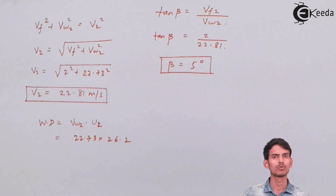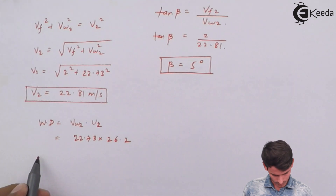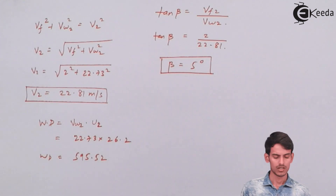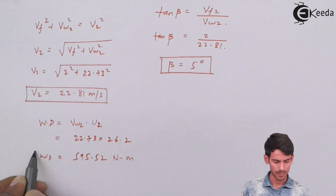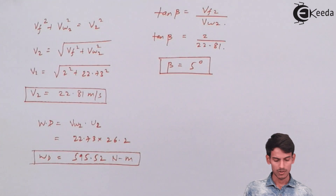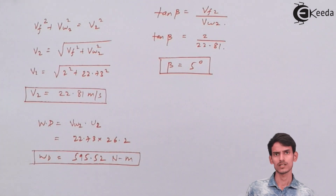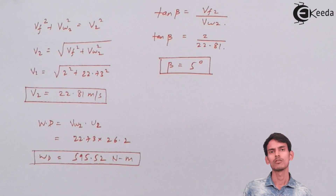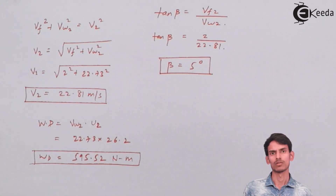The value of Vw2 is 22.73 m/s and u2 is 26.2 m/s. Multiplying these gives the work done as 595.52 Newton-meters. So we've found everything the question asked. We just need to use the formulas seen earlier, and you also need to be comfortable with trigonometry — tan theta and the Pythagorean theorem. That was all about this question. I hope you've understood. Thank you.